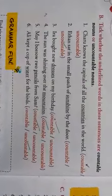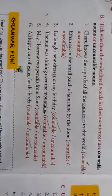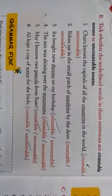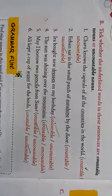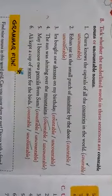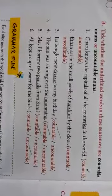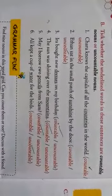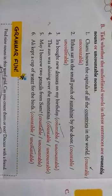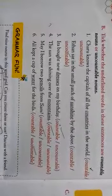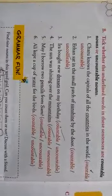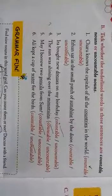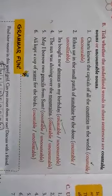First one: Charu knows the capitals of all the countries in the world. So the options are countable and uncountable noun. The underlined word is countries, so we can count. She knows all the capitals of the countries. It is a countable noun, so put a right mark on countable.